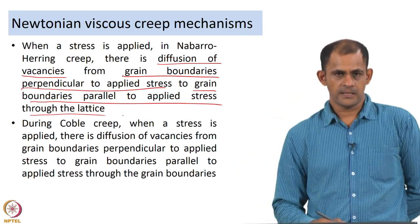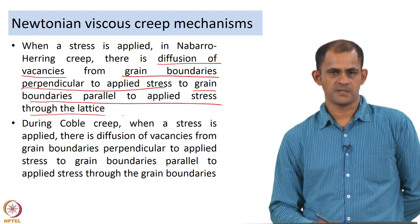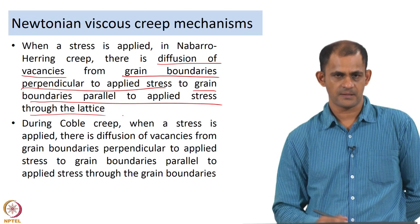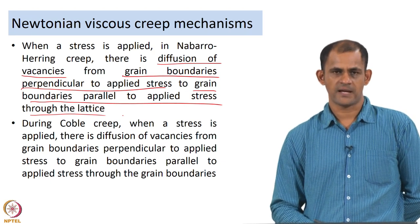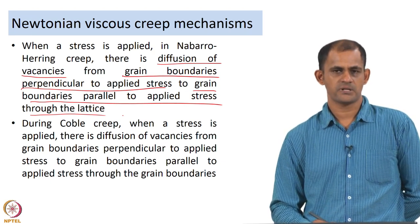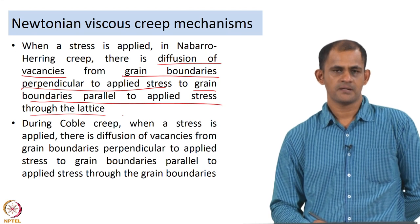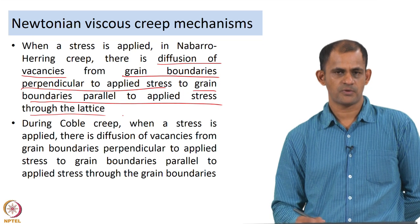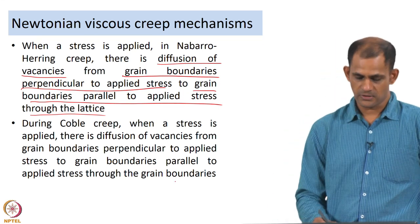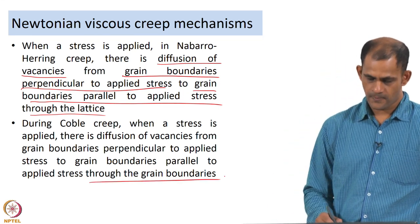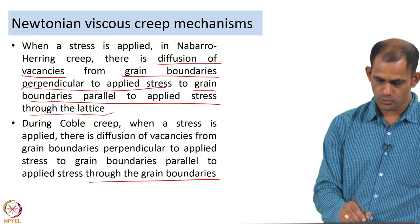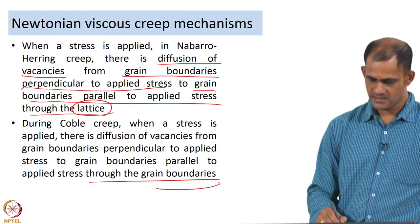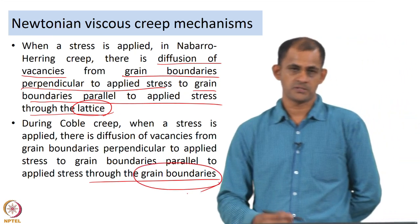In Coble creep, when a stress is applied, there is again diffusion of vacancies from grain boundaries perpendicular to the applied stress to grain boundaries parallel to the applied stress, but here the diffusion actually happens through the grain boundaries — instead of diffusion through the lattice, in Coble creep the vacancy diffusion happens through the grain boundaries.